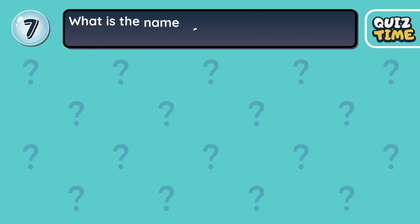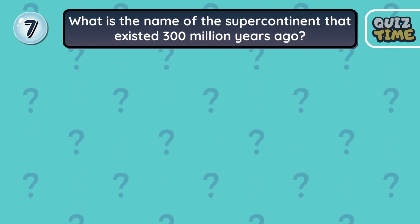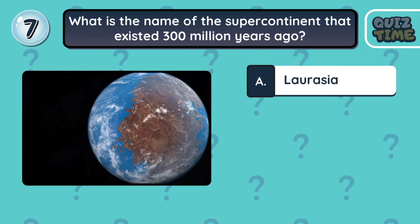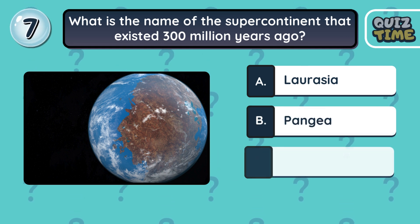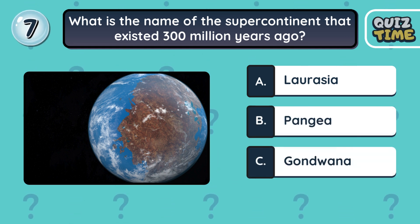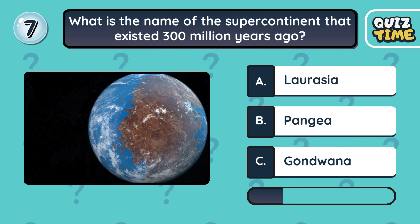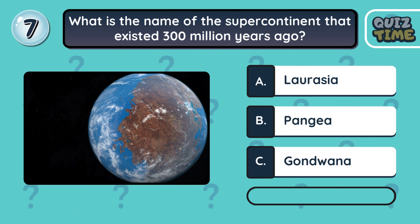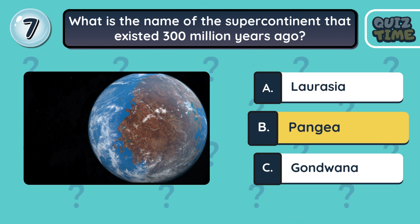Number 7. What is the name of the supercontinent that existed 300 million years ago? A. Laurasia. B. Pangaea. C. Gondwana. The correct answer is B. Pangaea.